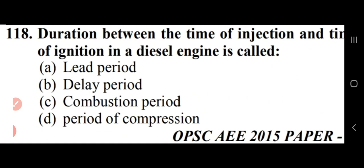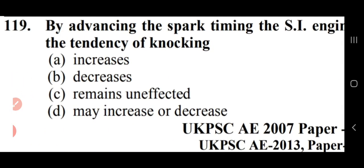The duration between the time of injection and the time of ignition in a diesel engine is called the delay period — option B. The delay period in a compression ignition engine depends on temperature, nature of the fuel mixture, relative velocity between fuel injection and air turbulence, and pressure of residual gases. By advancing the spark timing in an SI engine, the tendency of knocking increases — option A.